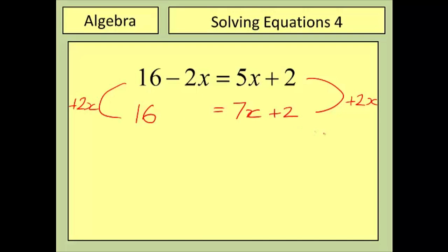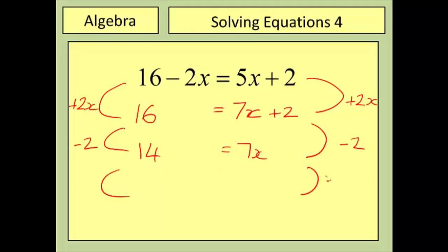The two is unaffected. From here it's a straightforward two-step linear equation: subtract two from both sides giving 14 equals seven x, then divide both sides by seven giving two equals x. Again, it doesn't matter that they're the other way around.